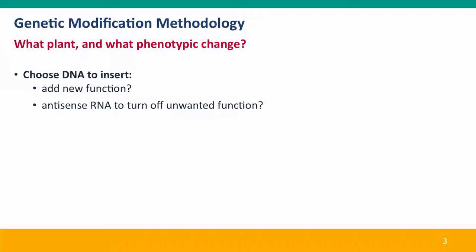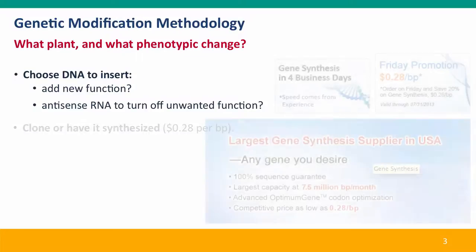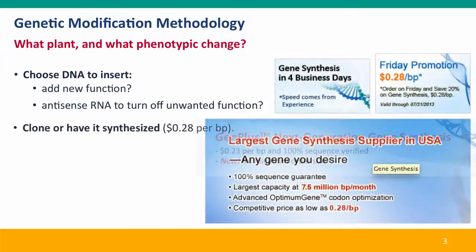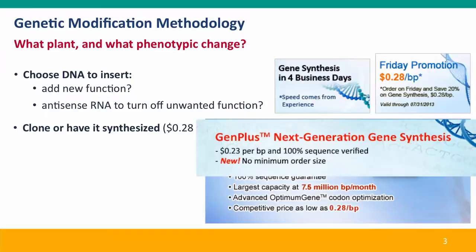Rarely is it a deletion — usually there's something you want to insert. This may be a DNA that will add a new function, or you may use antisense RNA, which you might remember from module 3, to turn off an unwanted function. Sometimes you will find the gene in another species, or very often now, you'll have it synthesized.